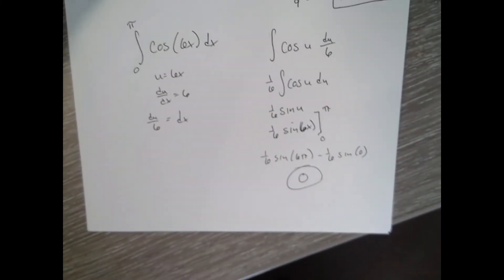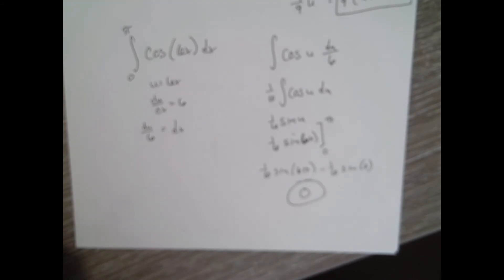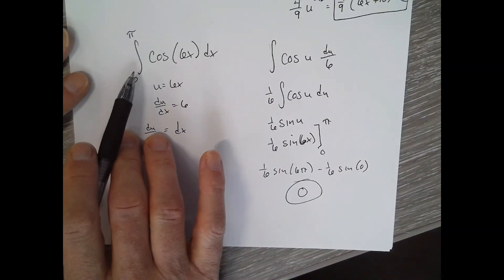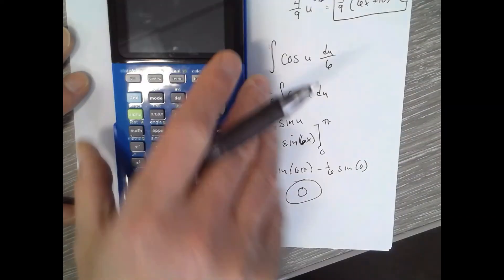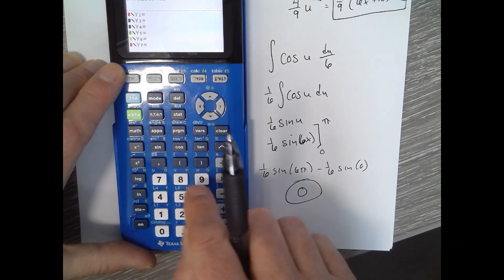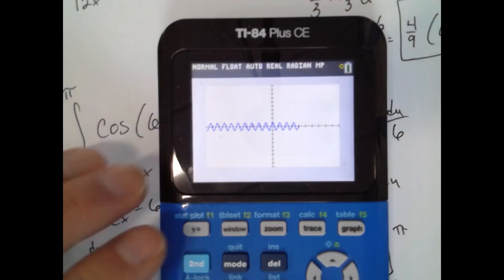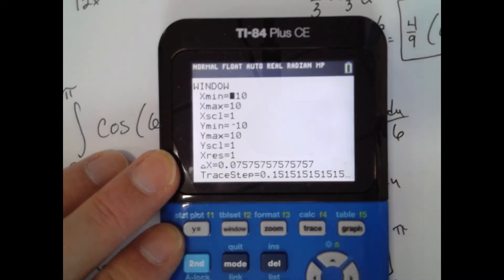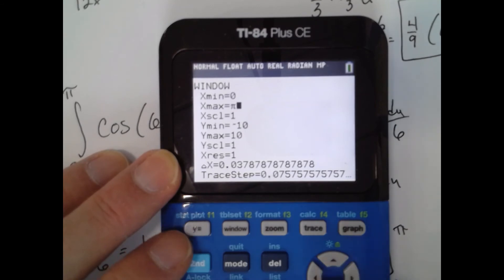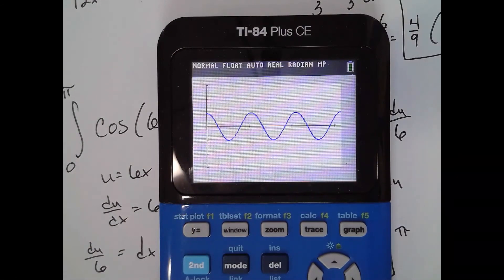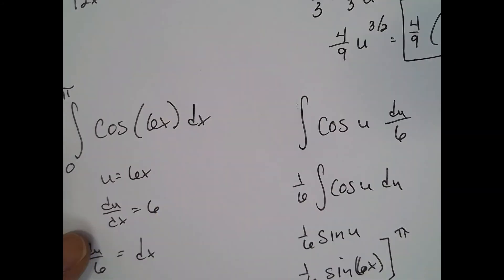If we think about what we just found, cosine of six x from zero to pi is going to have just as much area above the x-axis as there is below the x-axis. So that six is going to change the frequency but you can see there'll be just as much above as it is below just to confirm ourselves graphically. All right questions so far?